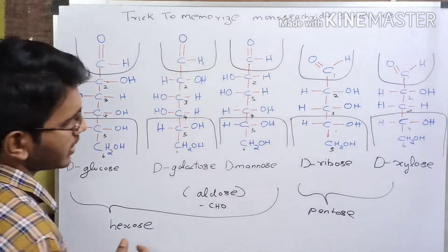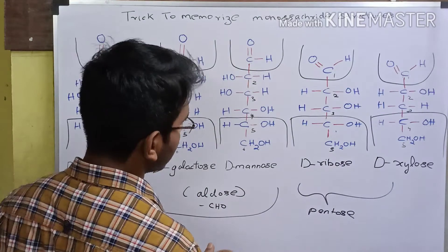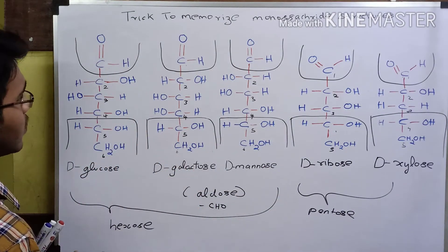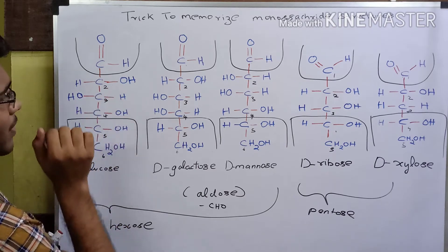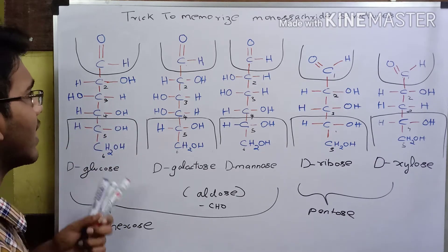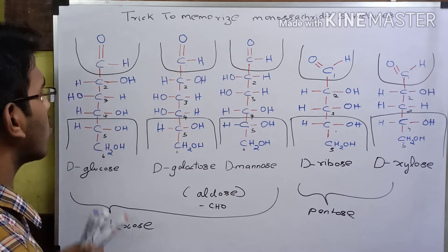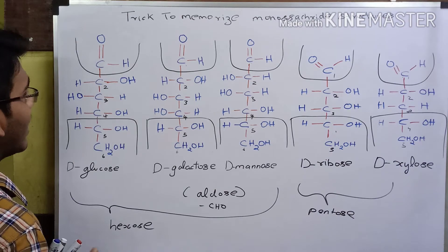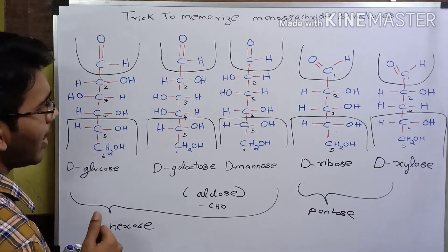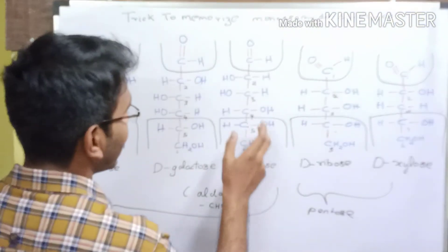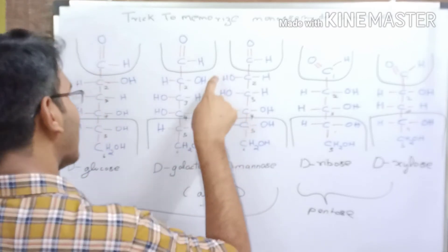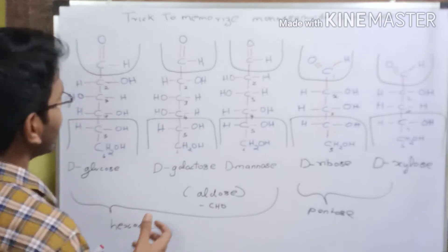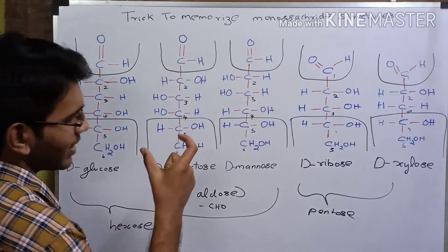Now let us see how to memorize the structure of mannose by comparing it with glucose. The difference is present only at the 2nd carbon atom. In glucose, the 2nd carbon atom has the OH group on the right hand side and hydrogen on the left. But in mannose, it is just opposite — the OH group is on the left hand side and hydrogen is on the right hand side.